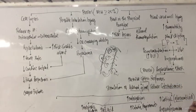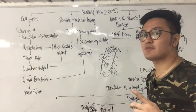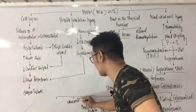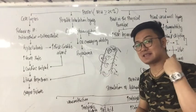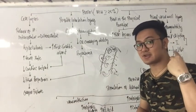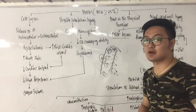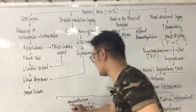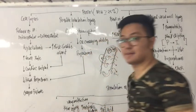Catecholamines — epinephrine and norepinephrine — mimic a sympathomimetic or prolonged sympathetic effect. Epinephrine causes vasoconstriction. When blood vessels are constricted, blood flow is impaired, resulting in tissue injury.